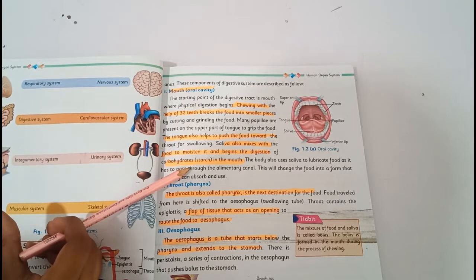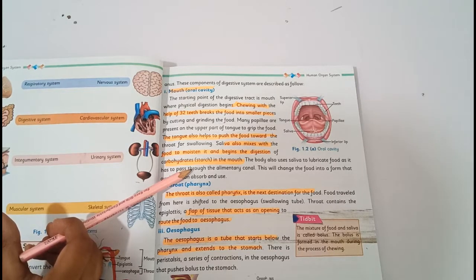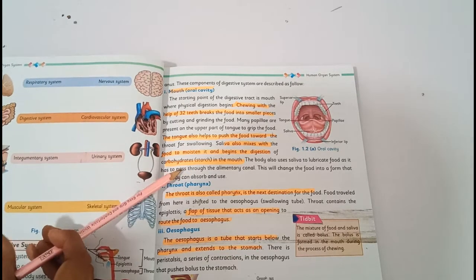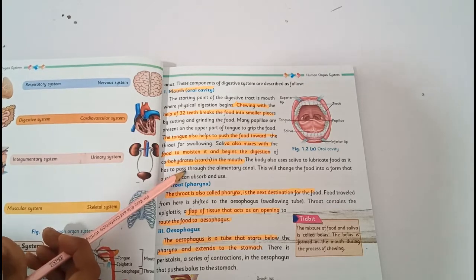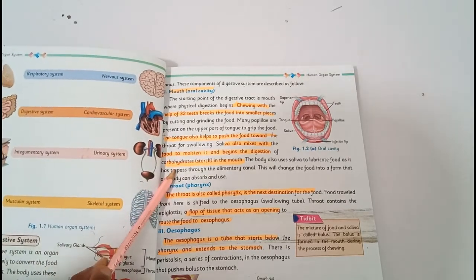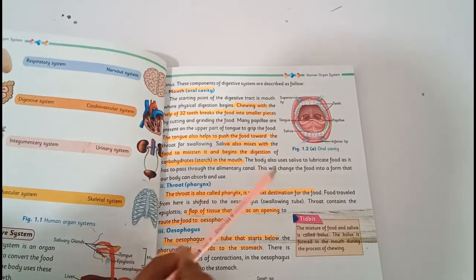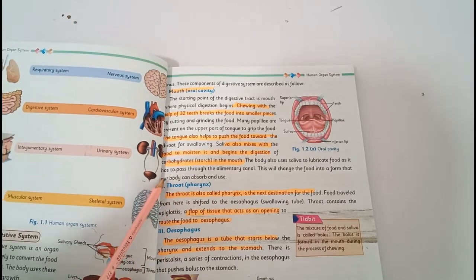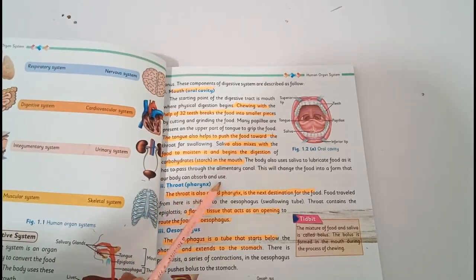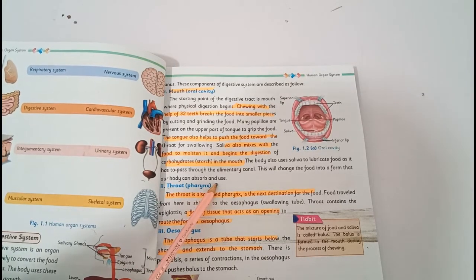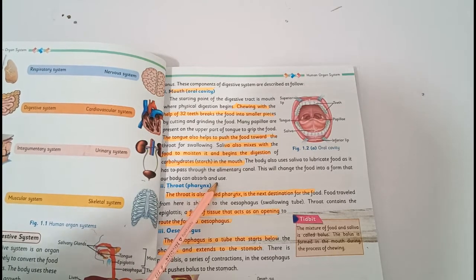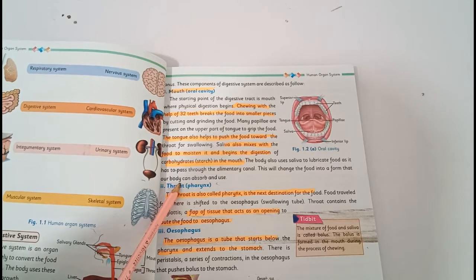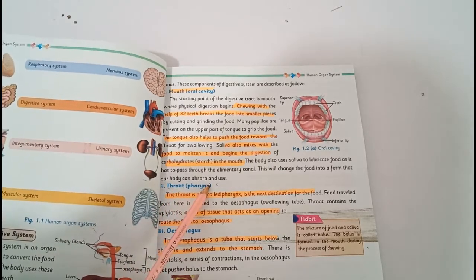Salivary glands produce saliva. As food passes through the alimentary canal, saliva lubricates our food so that it can easily pass through and changes the food into a form that our body can absorb and use.